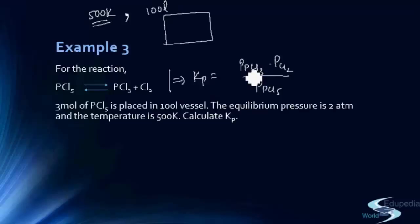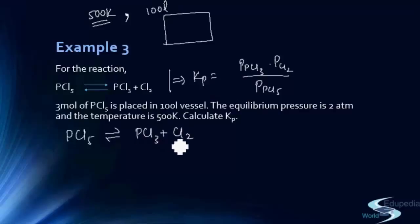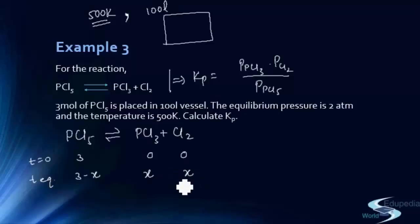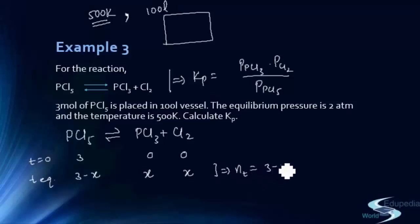Writing the equation PCl5 → PCl3 + Cl2: at t=0 we have 3 moles of PCl5 and 0 moles of PCl3 and Cl2. At equilibrium, moles of PCl5 remaining = 3−x, moles of PCl3 = x, and moles of Cl2 = x. Total moles at equilibrium = (3−x) + x + x = 3+x.